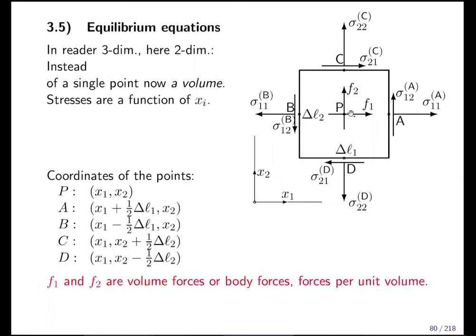Now the final ingredient is forces. On Earth we have gravity, which creates a volume force, also called a body force or force per unit volume. For a cube of material, gravity gives a body force f2 pointing downwards, while f1 due to gravity is zero. In general we use body forces in all directions. In outer space — for example on a space station in free flight — body forces are zero.